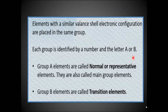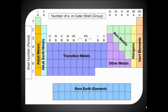Group A elements are called normal or representative elements, also called main group elements. Group B elements are called transition elements. In the periodic table, the number of electrons in the outer shell indicates the group number: Group 1A has one electron in the valence shell, 2A has two, 3A has three, 4A has four, continuing up to 7A with seven electrons and 8A with eight electrons in the valence shell.